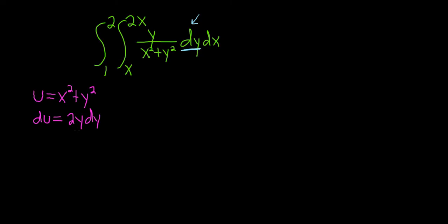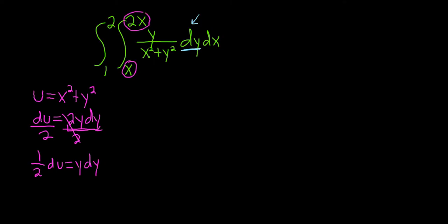Now we have to make this look like what's in our integral. We have an extra 2, so let's get rid of it by dividing both sides by 2. We write this as 1/2 du, and that's equal to y dy. Also in this problem we have limits of integration, so because we made a u-substitution, we're supposed to change them.